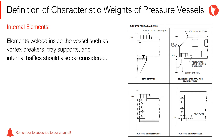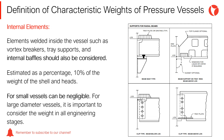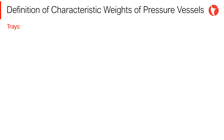Elements welded inside the vessel, such as vortex breakers, tray supports, and internal baffles, should be considered. Depending on each type of vessel, the weight of all these elements is usually estimated as a percentage — for example, 10% of the weight of the shell and heads — except for small equipment where these weights can be negligible. Also, in large diameter vessels, it is very important to consider the weight and design of these internal elements in all engineering stages. One of the internals that is more difficult to estimate are trays.